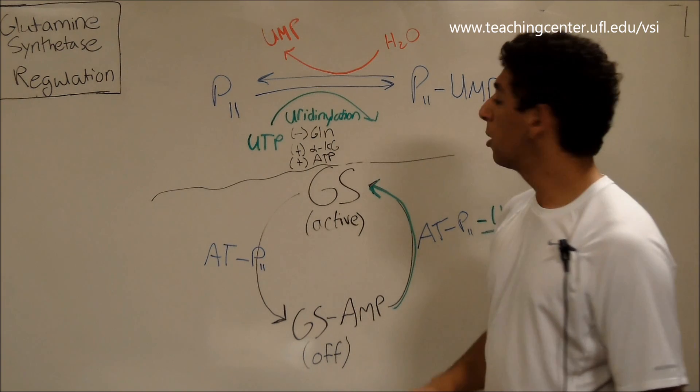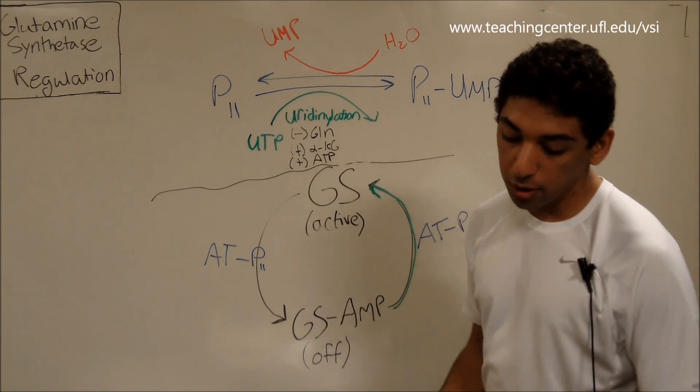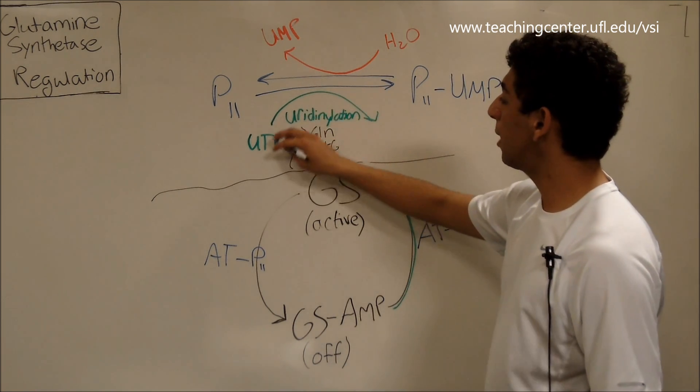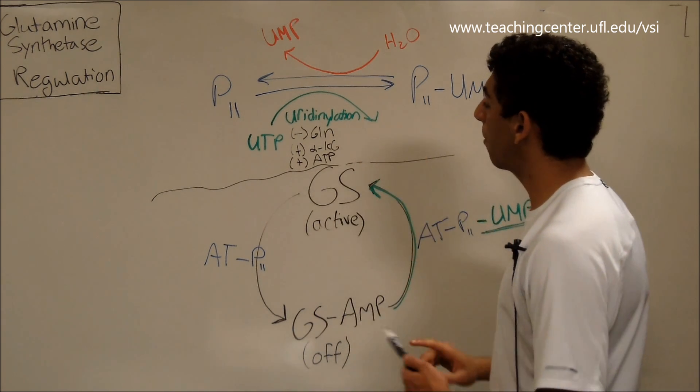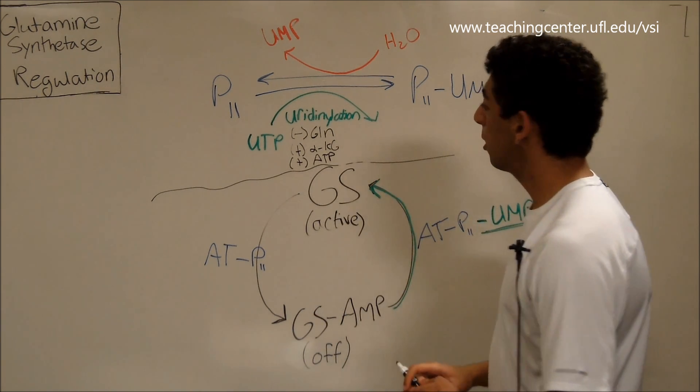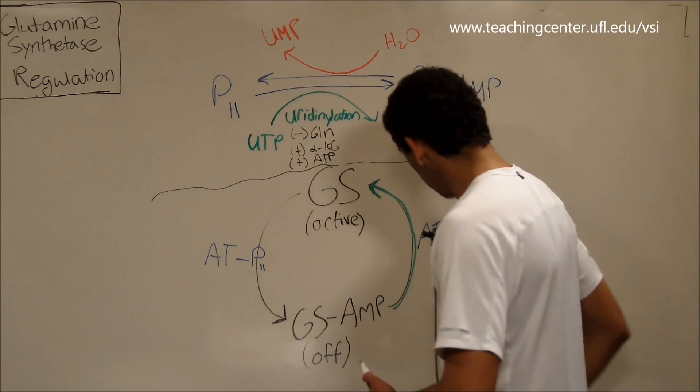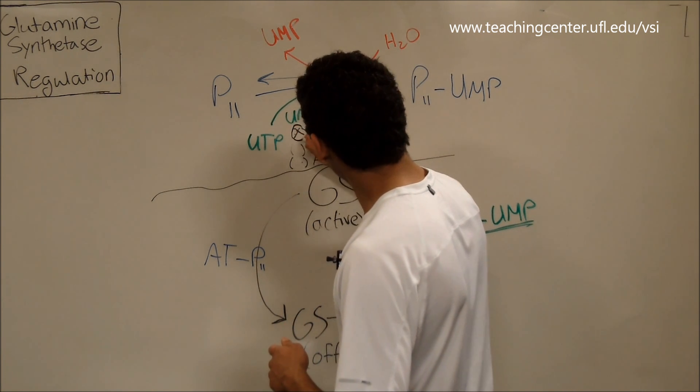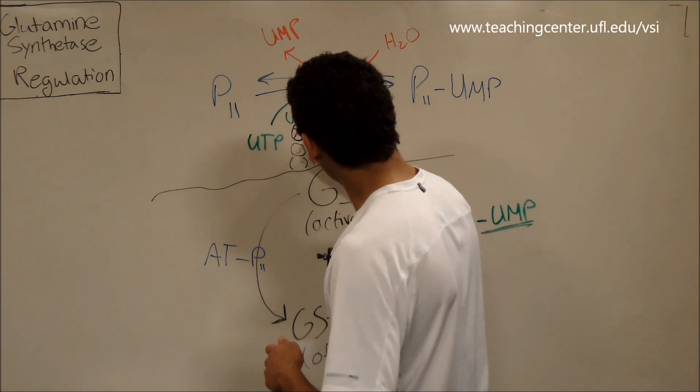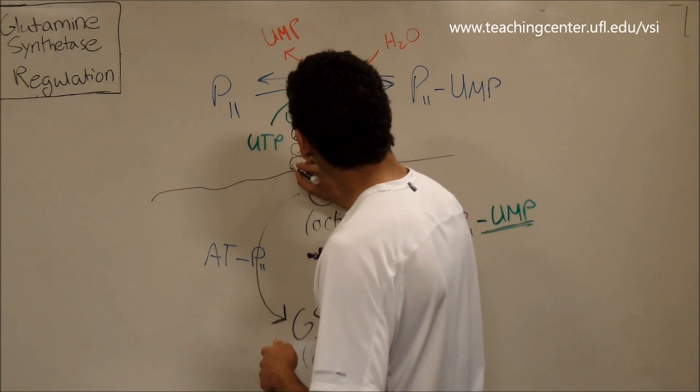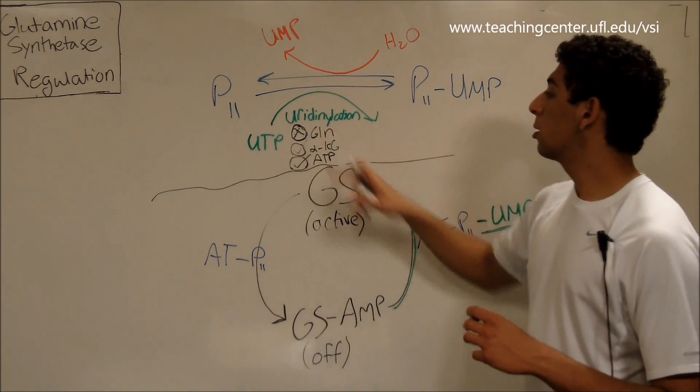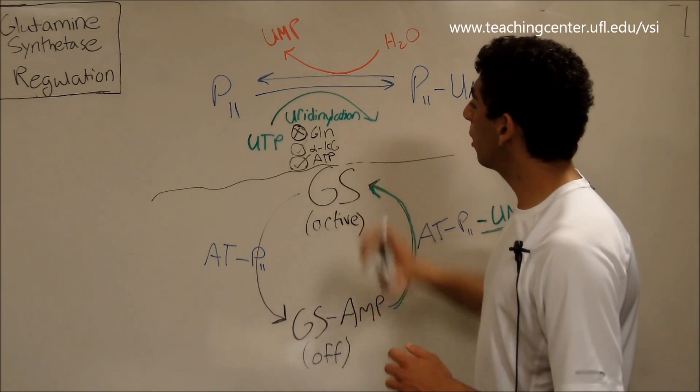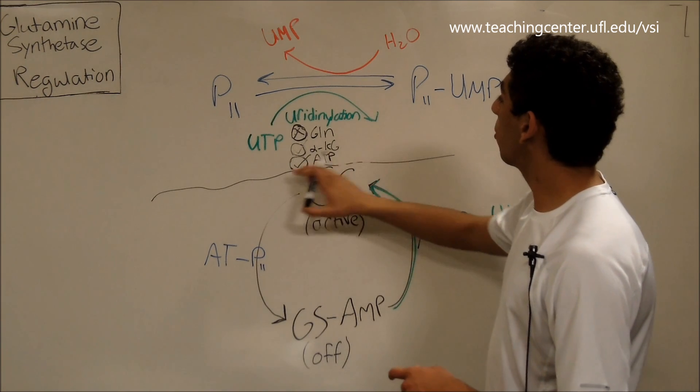For this pathway, alpha-ketoglutarate and glutamine do the opposite things. Right? So since glutamine activates, I'm sorry, since glutamine deactivates uridinalation, since it stops it from happening, alpha-ketoglutarate activates it. We can draw these the way you guys are used to seeing them actually, which is with X's and check marks. Keep things consistent. So glutamine invokes negative feedback here and stops the pathway from happening. Alpha-ketoglutarate and ATP promote uridinalation. So indirectly, they promote glutamine synthetase being active.